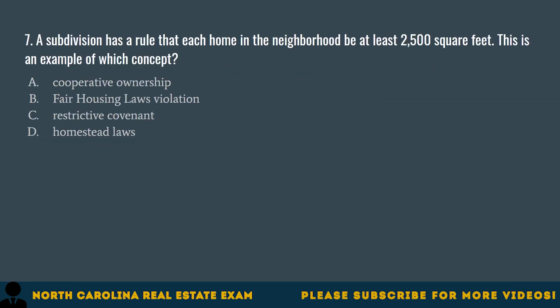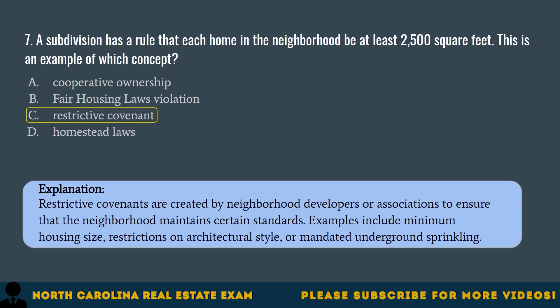Question 7. A subdivision has a rule that each home in the neighborhood be at least 2,500 square feet. This is an example of which concept? A. Cooperative ownership. B. Fair housing laws violation. C. Restrictive covenant. D. Homestead laws. The correct answer is C. Restrictive covenant. Restrictive covenants are created by neighborhood developers or associations to ensure that the neighborhood maintains certain standards. Examples include minimum housing size, restrictions on architectural style, or mandated underground sprinkling.